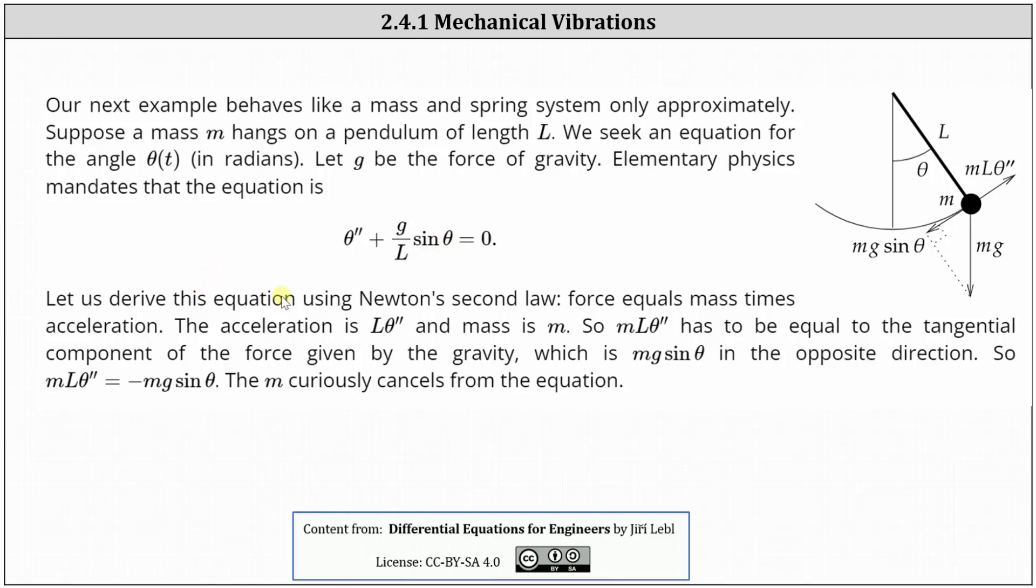Let us derive this equation by using Newton's second law, force equals mass times acceleration. The acceleration is L times theta double prime and mass is m. So mL theta'' has to be equal to the tangential component of the force given by the gravity, which is mg sin(theta) in the opposite direction. This indicates that mL theta'' equals negative mg sin(theta). Notice the m simplifies out, and if we divide through by L, we do get theta'' + (g/L)sin(theta) = 0.